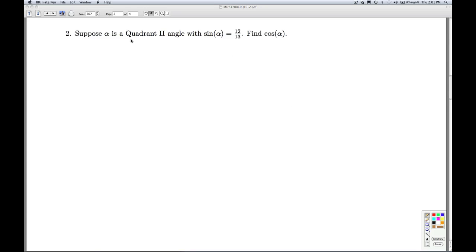Okay, number two. Suppose alpha is a quadrant two angle with sine alpha equals 12 thirteenths. Find the cosine of alpha. Okay, so how are we supposed to do that? Well, first off, we have to see if this is reasonable.